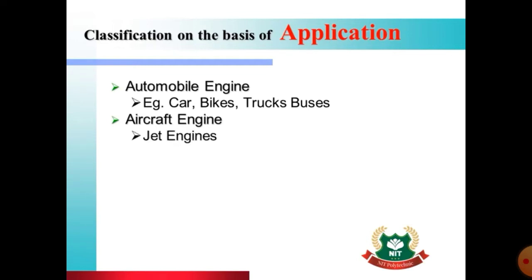In aircraft, we mainly use jet engines. However, in light mode aircraft — smaller aircraft — we use a reciprocating type of engine. After that, there is the locomotive engine. A locomotive engine is an engine used in trains.